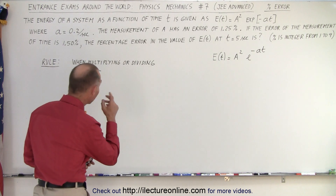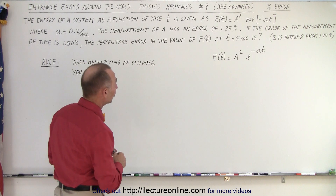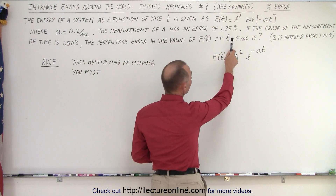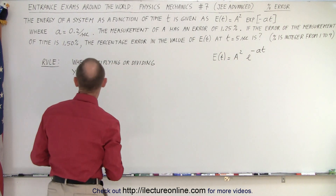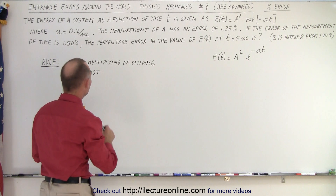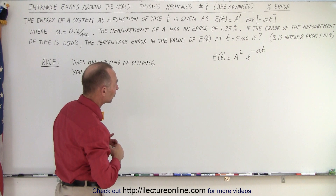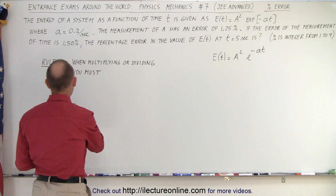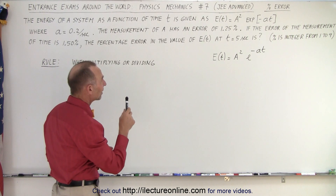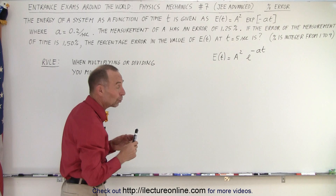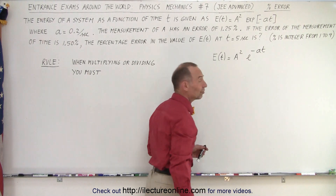They gave us an equation — let's read the question. The energy of a system as a function of time t is given as E equals a squared times e to the minus at, where a is defined as 0.2 per second. The measurement of a has an error of 1.25 percent, and the error of the measurement of time is 1.5 percent. The percentage error in the value of E at t equals 5 seconds is what we're trying to find.